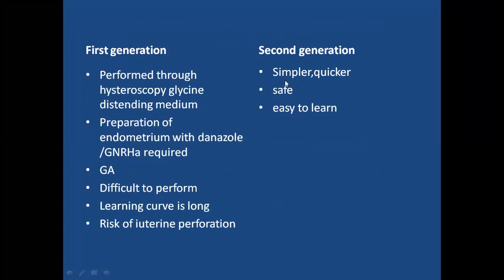The difference between first and second generation minimally invasive surgeries: first generation is performed under hysteroscope with glycine as the distending medium; preparation of endometrium with danazol and GnRH analogues is required to make endometrium atrophic before the procedure; it must be performed under general anesthesia; it is difficult to perform with a long learning curve; and there is risk of uterine perforation. Second generation methods are simple, quick, safe, and easy to learn.